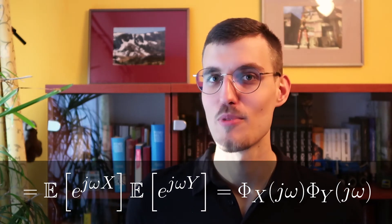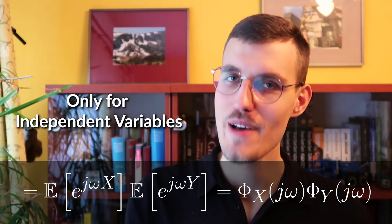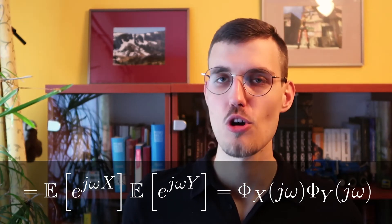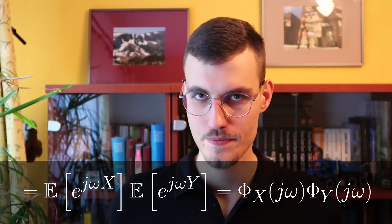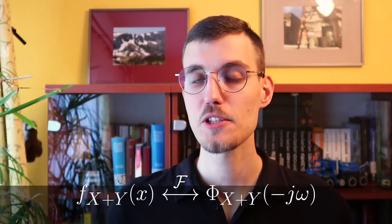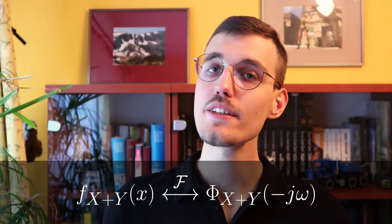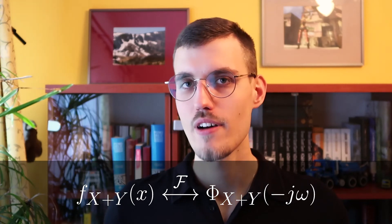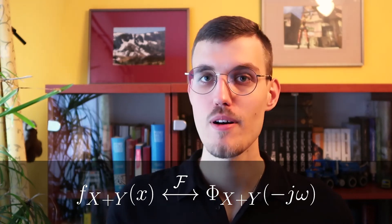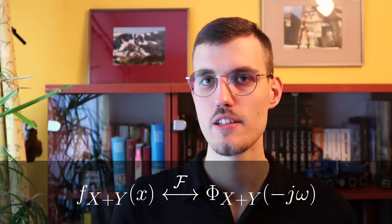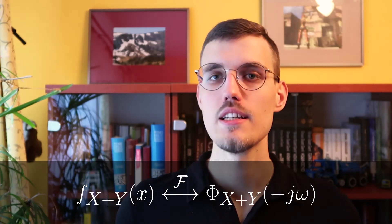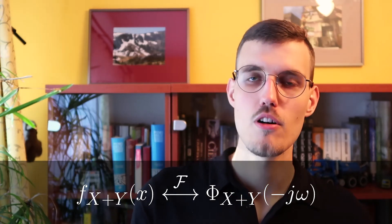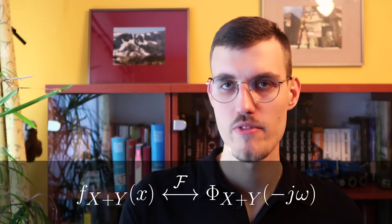It is important to stress that this holds only for independent variables — otherwise we would not be able to factorize the joint probability density function. With this discovery, let us go back to our interpretation of the characteristic function as the Fourier transform with a negated argument. We observe that phi_{X+Y} evaluated at negative omega is equivalent to the probability density function of X plus Y in the random variable domain.